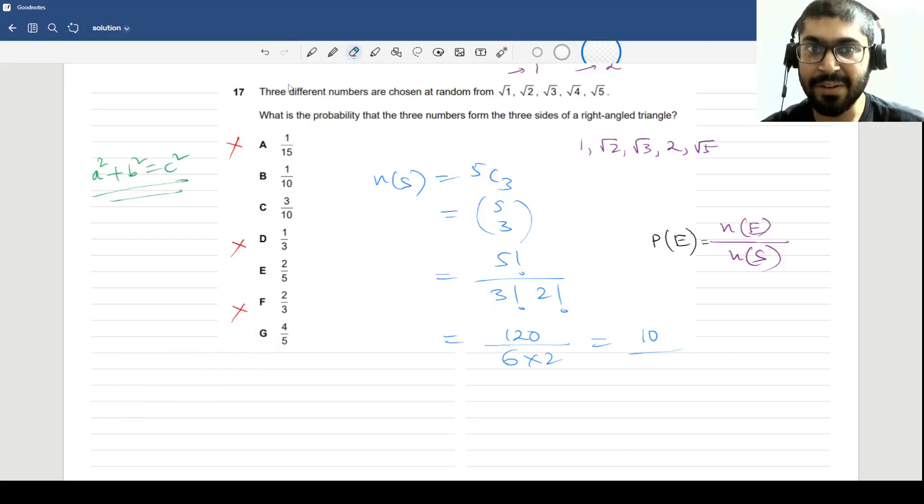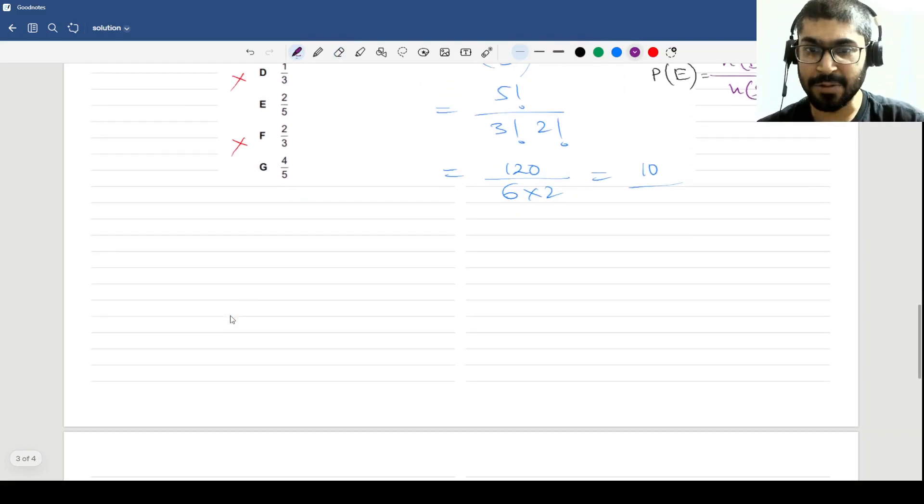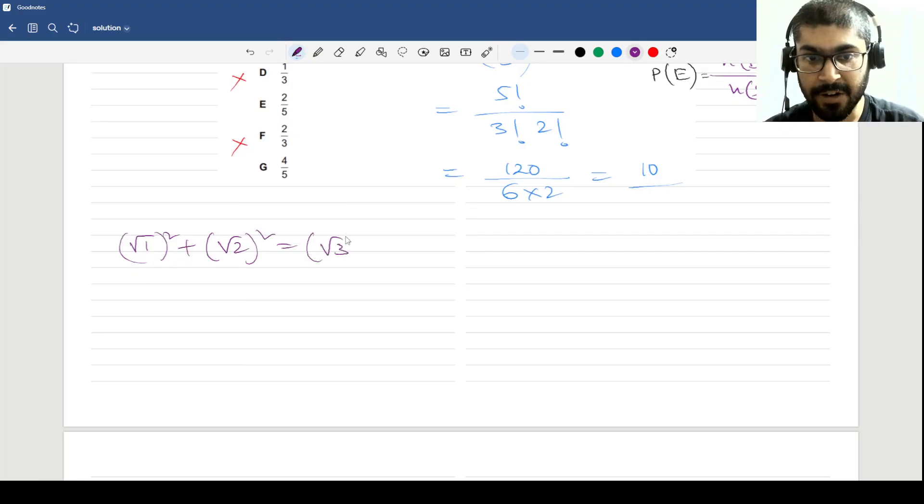That will hold, that means (√1)² + (√2)² = (√3)². When we square them we get the actual sides. 1 + 2 = 3, which means √1, √2, and √3 could be the sides of a right angle triangle obeying the Pythagorean theorem.